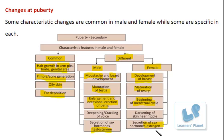The menstrual cycle will be explained in detail later. Another feature observed among females is the darkening of skin near the nipples.